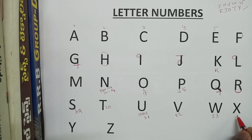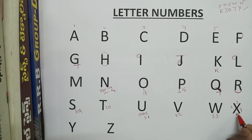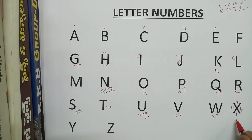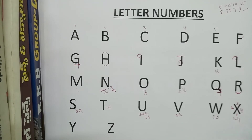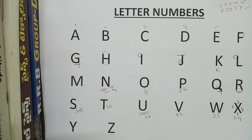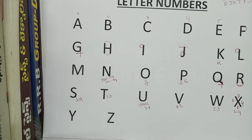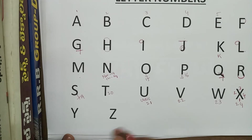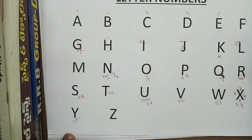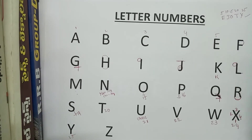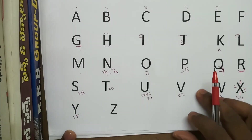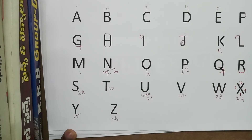X code is 24 — count the strokes: 1, 2, 3, 4 and 1, 2, 3, 4, giving 24. X code is 24. Y code is 25 — already covered in the EJOTY code. Z code is 26. So A to Z all letter codes are done.